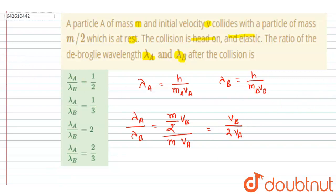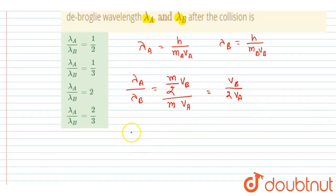So it is given that initially a particle was moving with velocity v and after the collision they start moving with velocity vA and vB. So let's draw the diagram. So this was moving with velocity v and the mass of this was m/2 and it was at rest.